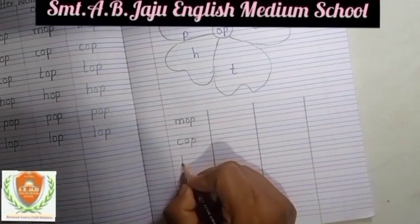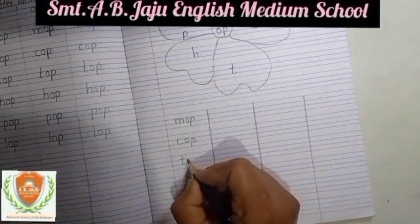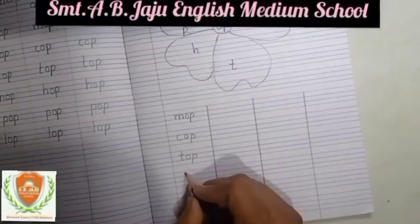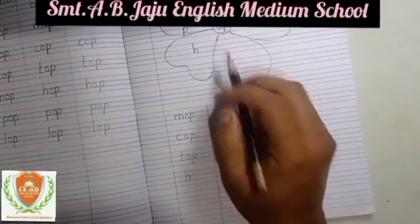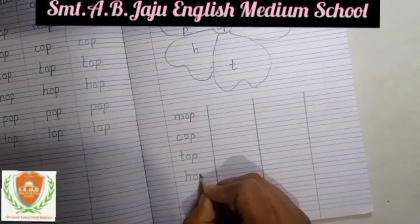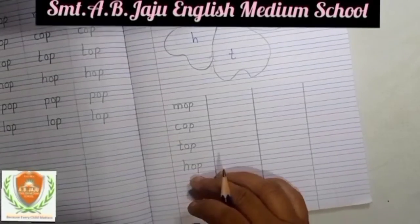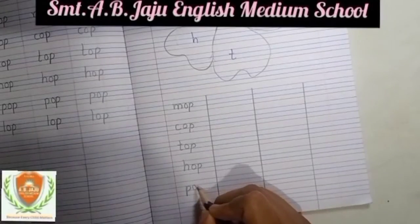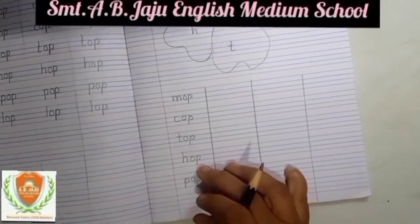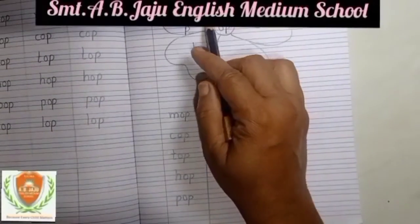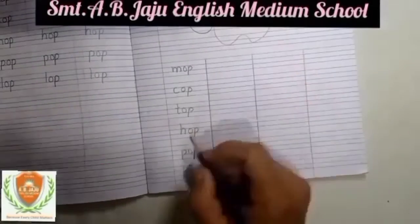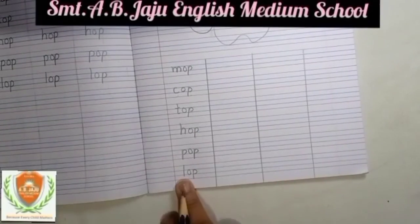Like this you have to write down all the words. Write small T then write Op — T-O-P, top. Next is H — write small H and write Op — H-O-P, hop. Write small P then join Op — P-O-P, pop. Last is L — write small L, then write Op — L-O-P, lop.